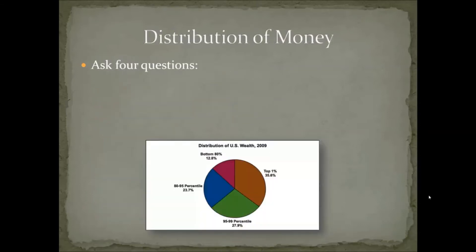So let's begin with the distribution of money. There are four questions we tend to ask. The first question is: where is the money geographically based? This seems like an obvious question — we'd say, well, if it's the money of the United States, wouldn't it be based in the United States?